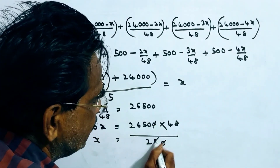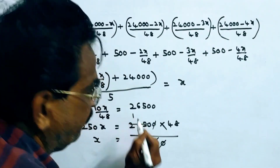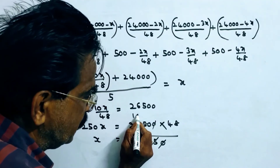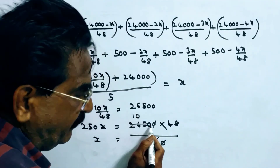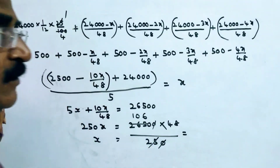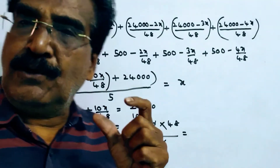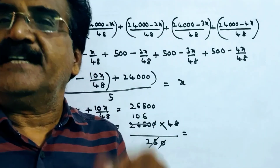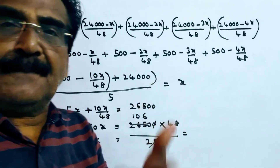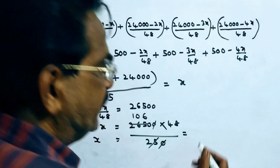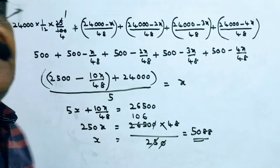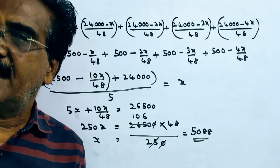Simplifying: zeros cancel, giving 106 × 48. Calculating 48 × 106 = 4800 + 288 = 5088. So the monthly installment amount is Rs. 5,088. Thank you.